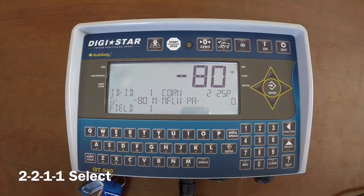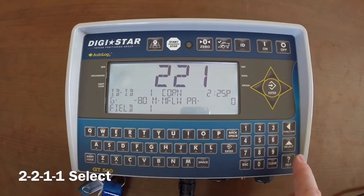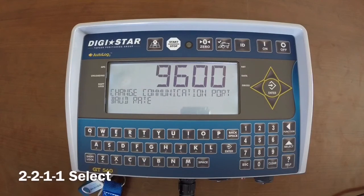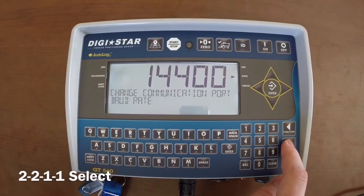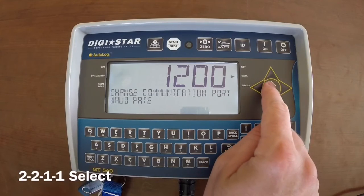Type in 2201 and then the select button. Change this setting to 1200 by pressing the select button, then press the enter button.